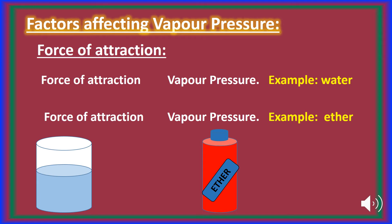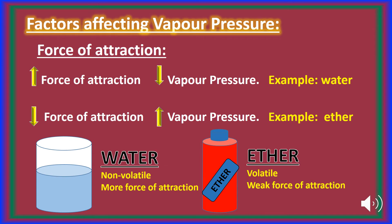Factors affecting vapor pressure. The first factor is the force of attraction, or intermolecular forces. Remember that vapor pressure depends upon the nature of the liquid. Different liquids have different intermolecular forces. Liquids having stronger intermolecular forces show low vapor pressure — for example, water. Whereas liquids having weak intermolecular forces show high vapor pressure — for example, ether.